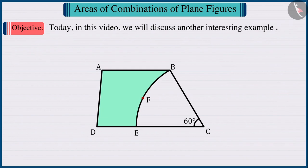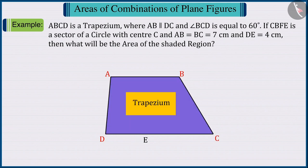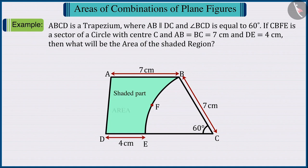we will discuss another interesting example. In the given figure, ABCD is a trapezium where AB is parallel to DC and the measure of angle BCD is 60 degrees. If CBFE is a sector of a circle with centre C and the measure of AB and BC is 7 cm and the measure of DE is 4 cm, then what will be the area of the shaded region?